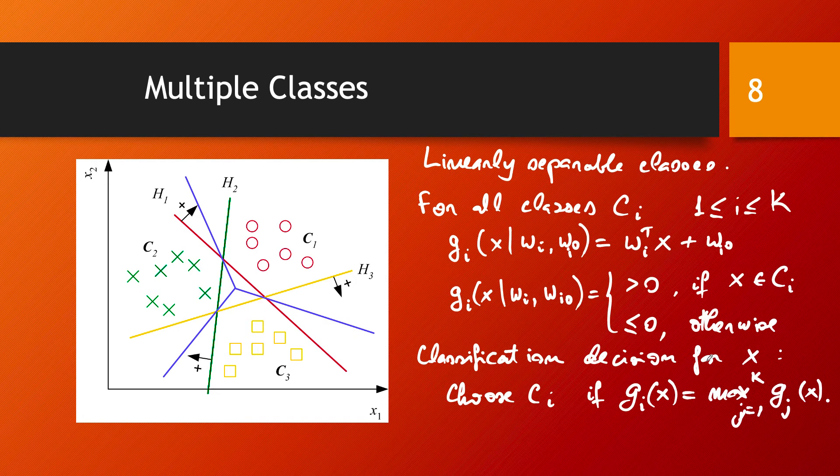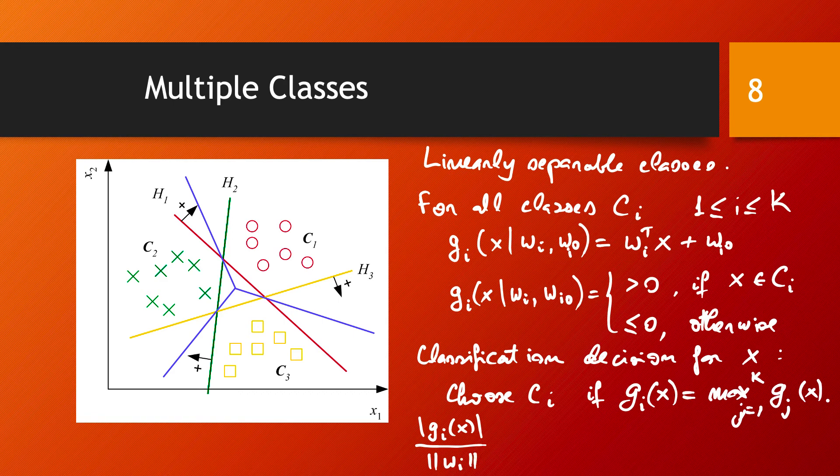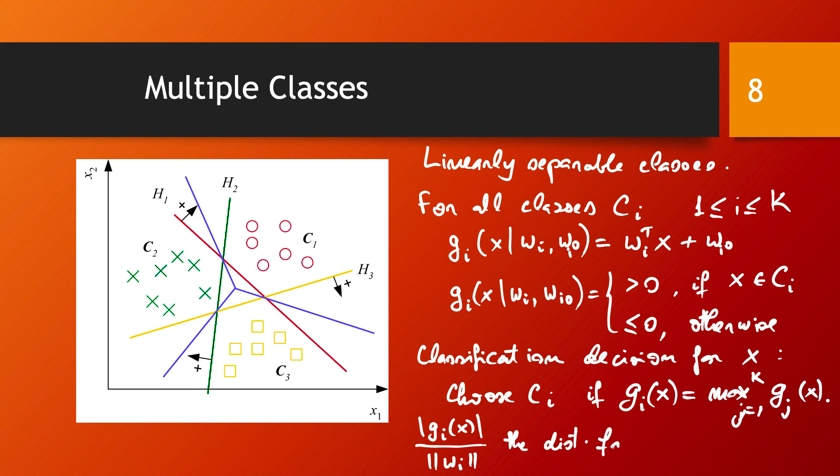As a matter of fact, it's really quite easy to see that this module of gi of x divided by the norm of wi, or maybe wi is already taken with norm 1. This is the distance from our point xi to the hyperplane.